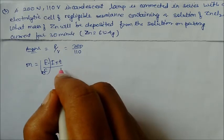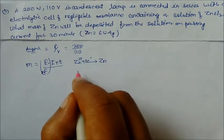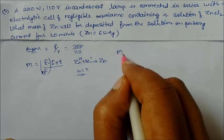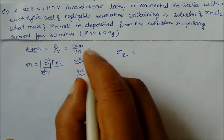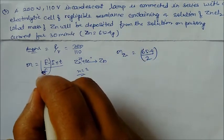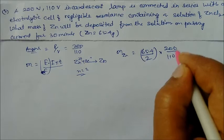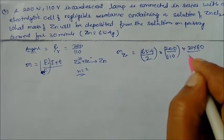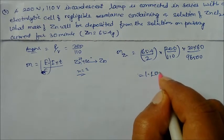Zinc deposits using 2 electrons: Zn²⁺ → Zn, so n = 2. Equivalent mass of zinc = 65.4 / 2. Putting values: m = (65.4/2) × (200/110) × (30 × 60) / 96500. Solving gives 1.109 grams. This is our answer for the mass of zinc deposited.